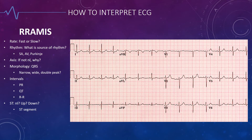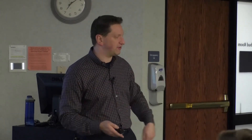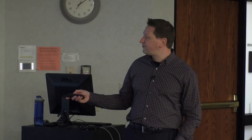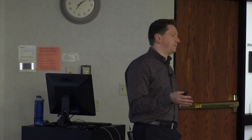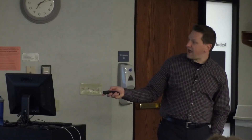Intervals. The PR interval should be between three and five small boxes. You only have to remember one thing: three to five. Three to five big boxes for the QRS, three to five small boxes for the PR interval. If it's more than five small boxes, you have type one AV block — PR prolongation. The QT interval is from the start of the QRS to the end of the T wave. Here's the easy way to simplify that: if the T wave ends more than halfway between two QRS complexes, it's too long. You're allowed to go up to halfway through — if it's significantly more than halfway, the QT interval is too long.